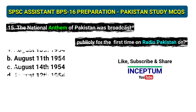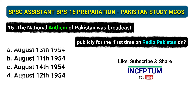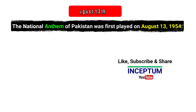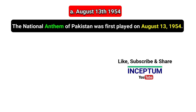Question 15: The national anthem of Pakistan was broadcast publicly for the first time on Radio Pakistan on — options: 13th August 1954, 11th August 1954, 14th August 1954, 12th August 1954. The correct answer is option A, 13th August 1954. The national anthem of Pakistan was first played on 13th August 1954.